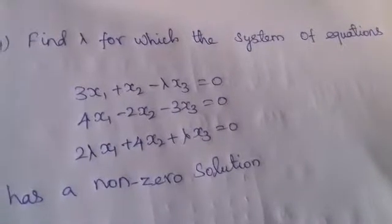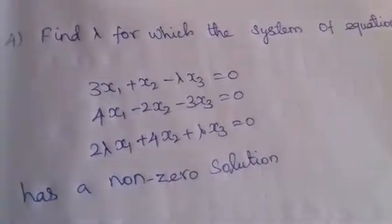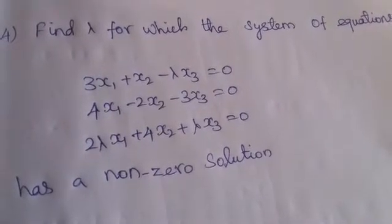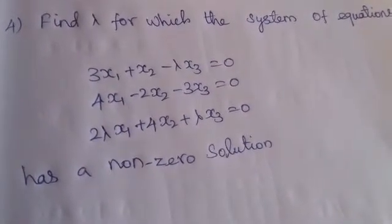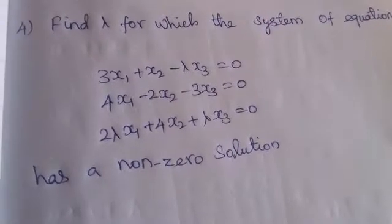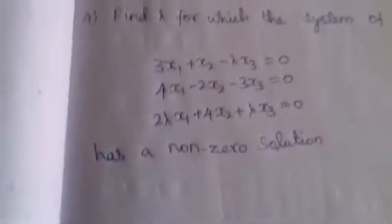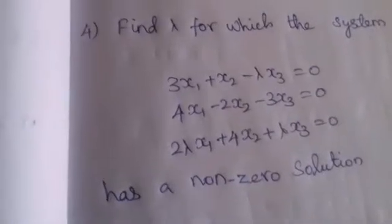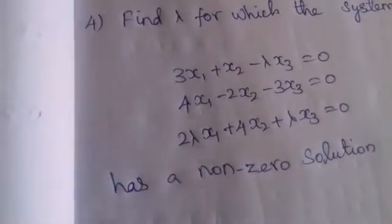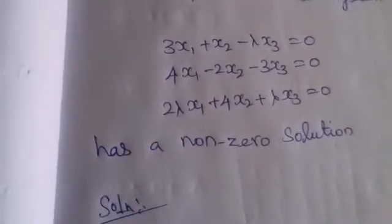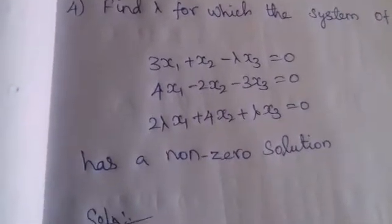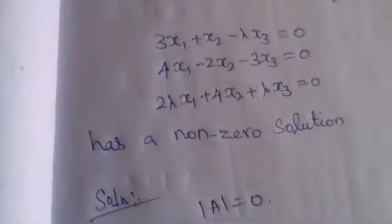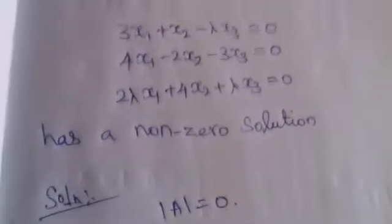Next question: find λ for which the system of equations — 3x₁ + x₂ − λx₃ = 0, 4x₁ − 2x₂ − 3x₃ = 0, and 2λx₁ + 4x₂ + λx₃ = 0 — has a non-zero solution. The condition for a non-trivial (non-zero) solution is that the determinant of the coefficient matrix A equals 0.